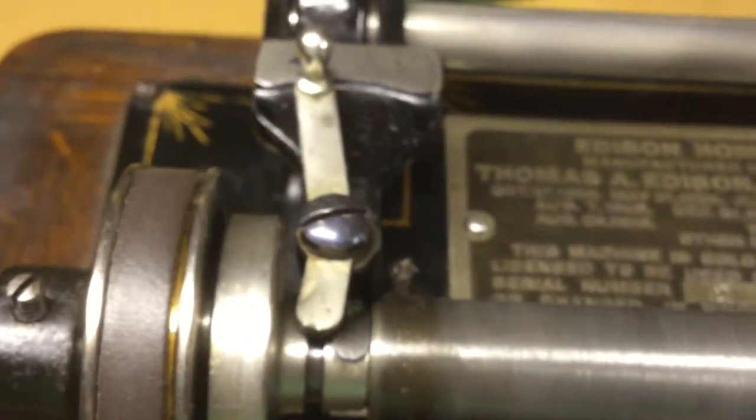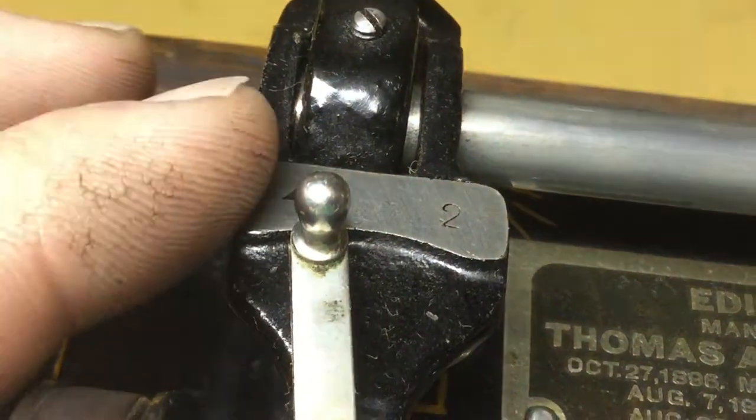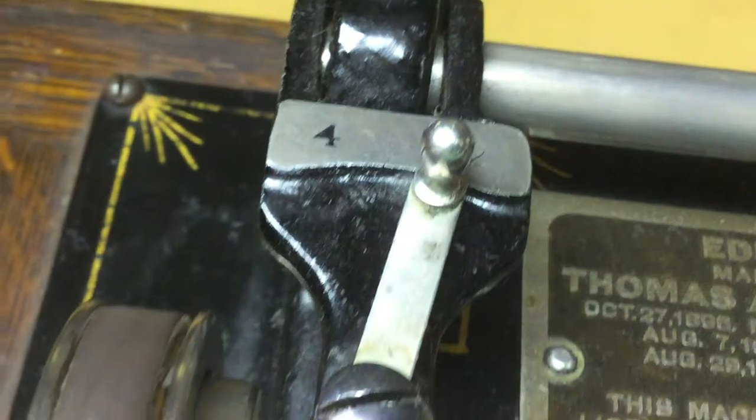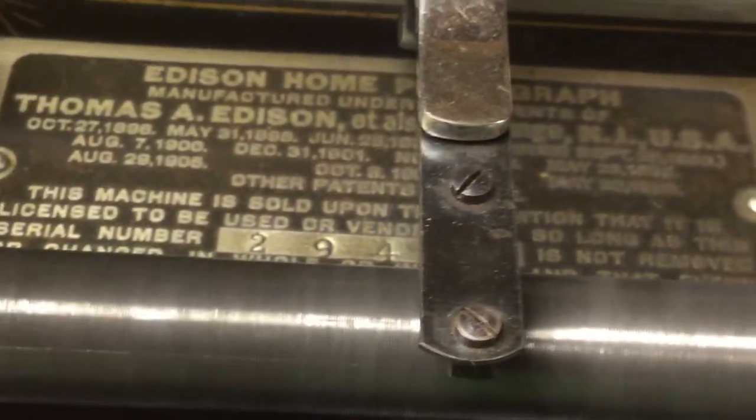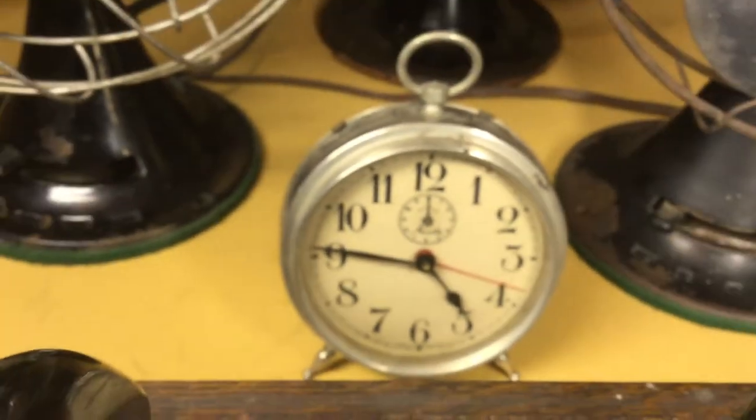In this case, because this is a model B home that's been converted to play four-minute records, we need to switch it back to the two-minute position or else we'll have to wait two minutes to get a result instead of one. And then we need to use a clock with a seconds hand.